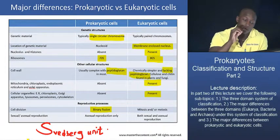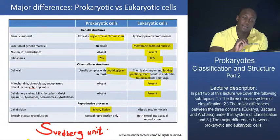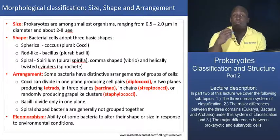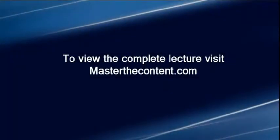What we want to do next is move on from bacterial taxonomy and head into bacterial morphology — specifically, the morphological classification of bacterial cells.